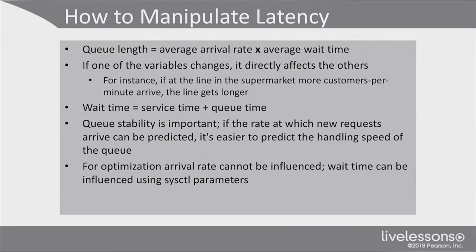Another formula that applies is the formula for wait time: wait time equals service time plus queue time. Service time is the time a process actually spends on the CPU, and queue time is the time the process waits in the queue. In latency, queue stability is important. If the rate at which new requests arrive can be predicted, it's easier to predict the handling speed of the queue. It's difficult to influence the arrival rate because it depends on your application, but wait time can be influenced using sysctl parameters.